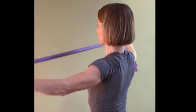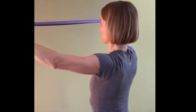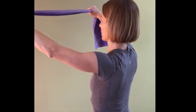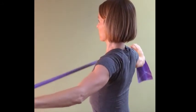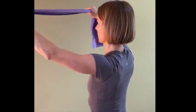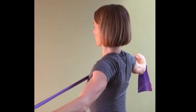Think about this exercise, a posterior deltoid fly with elastic resistance. The joint action of the shoulder is horizontal abduction, but at the end of the movement, the rhomboids and mid-trapezius muscles contract for scapular retraction.